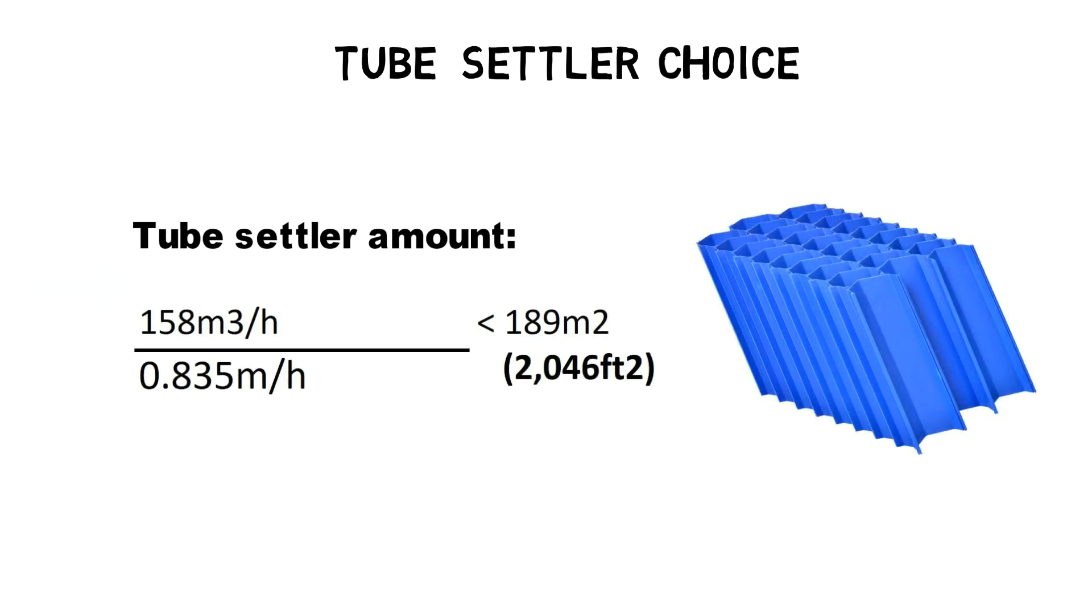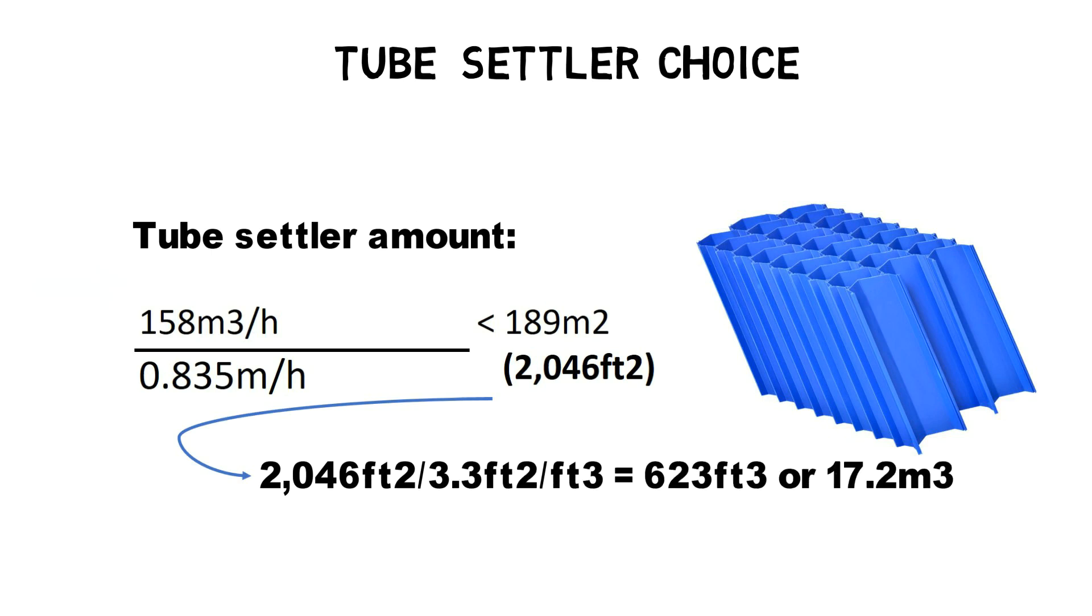Dividing this result by 3.3 square feet per cubic foot equals the total required amount of 623 cubic feet or 17.2 cubic meters of tube settlers for this application.